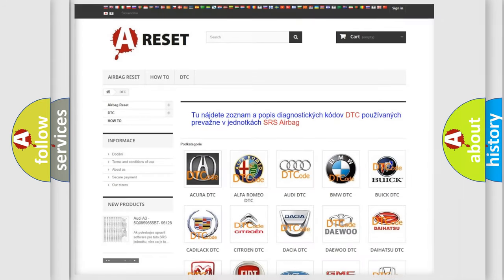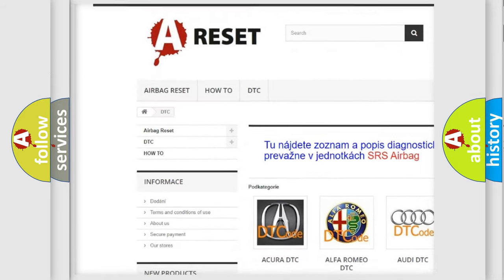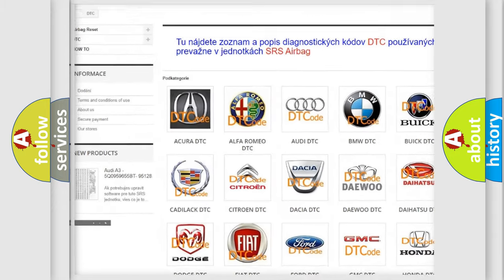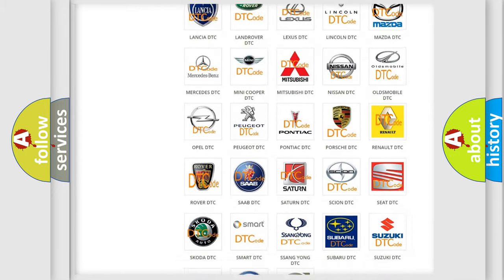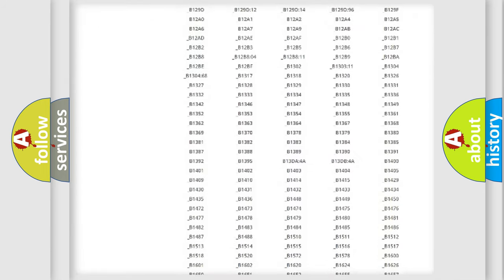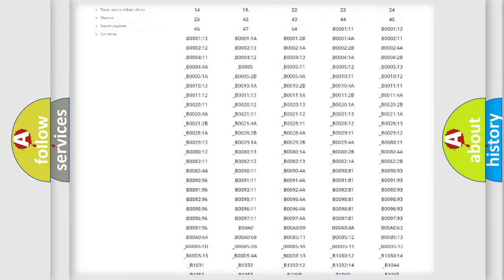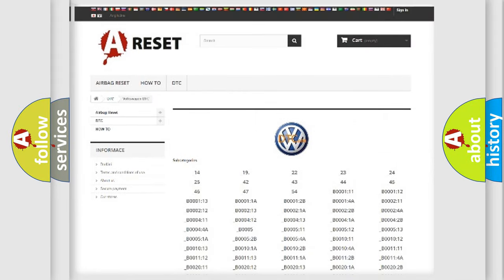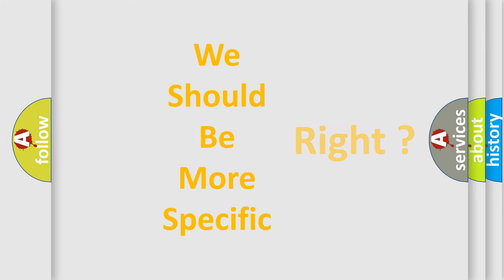Our website airbagreset.sk produces useful videos for you. You do not have to go through the OBD2 protocol anymore to know how to troubleshoot any car breakdown. You will find all the diagnostic codes that can be diagnosed in Volkswagen vehicles, and many other useful things. The following demonstration will help you look into the world of software for car control units.